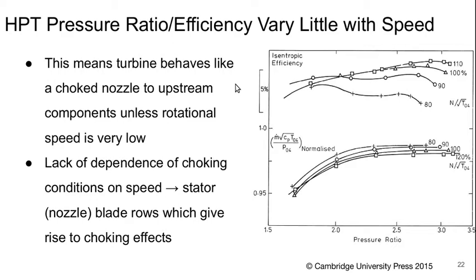This means essentially that the turbine behaves like a choked nozzle as far as upstream components are concerned, unless the rotational speed is really low. The lack of dependence of choking conditions on speed tells us that it's the stator or nozzle blade rows that give rise to the choking effects — otherwise they would be strongly dependent on rotational speed, as we saw in the fans.